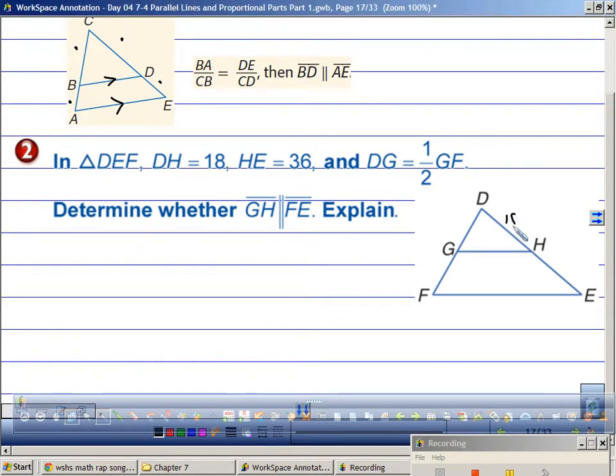DH is 18. Here's DH. HE is 36. So we're going to be comparing these two sides. I'm going to set that up. DG is half of GF. Do I know what GF is? So I'm going to say GF is X. So if GF is X and DG is half of X, wouldn't I write that half of X or X divided into 2? So since 18 is compared to 36, I'm going to compare X divided by 2 with X.